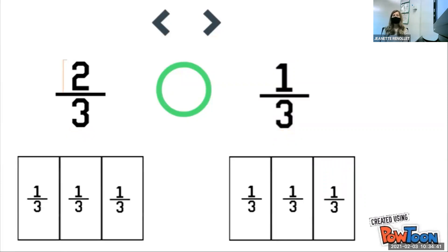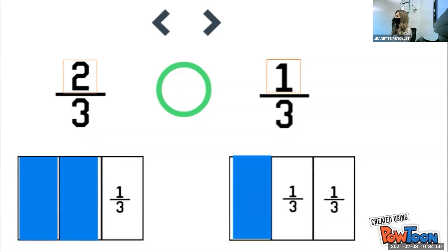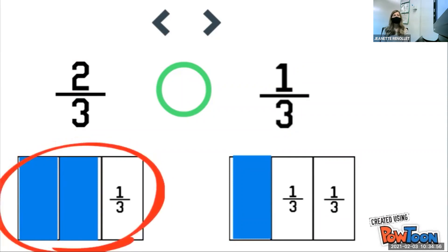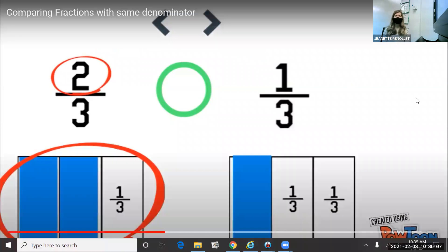Two-thirds has a numerator of two, so we're going to shade in two of our thirds. One-third has a numerator of one, so we'll shade in one of our thirds. Now we can look at our shaded regions of our models and we can see that two-thirds has a greater amount shaded in. We also know that because it has a numerator of two, which is greater than the numerator of one. So two-thirds is greater than one-third.